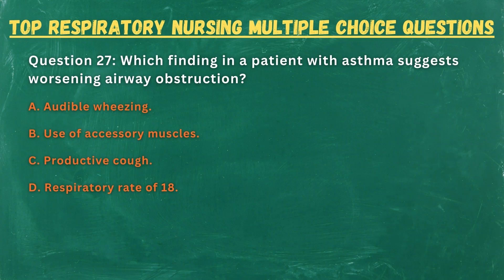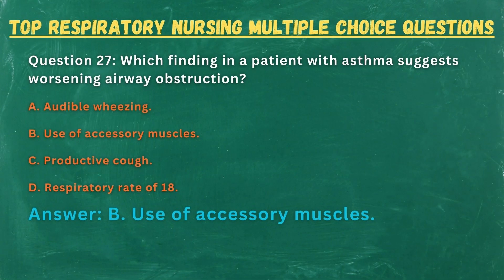Question 27. Which finding in a patient with asthma suggests worsening airway obstruction? A. Audible wheezing. B. Use of accessory muscles. C. Productive cough. D. Respiratory rate of 18. Answer: B. Use of accessory muscles.